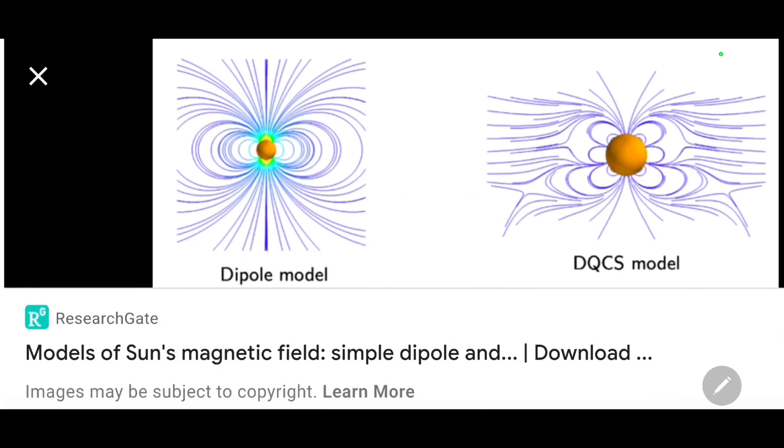Let me try to explain what she's trying to get across here. What we've been told for a long time is what we see on the left here is what the Sun has is a dipole magnetic field.